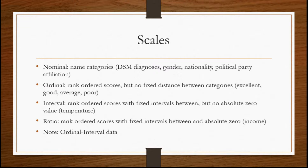A more precise way of classifying scales is as nominal, ordinal, interval, or ratio. A nominal scale just names categories — for example, DSM-5 diagnoses: you either have major depressive disorder or you don't. Other examples are gender, nationality — you're either Russian, Ukrainian, Lithuanian, or American — and political affiliation. The difference with discrete scales is that nominal scales can have more categories.